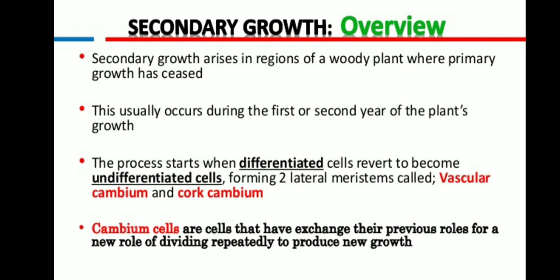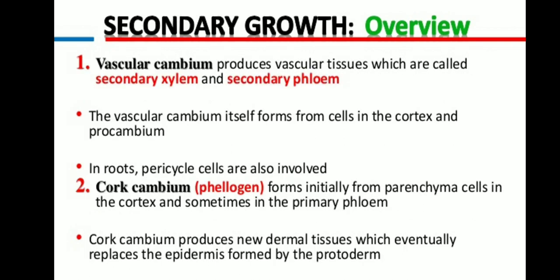This usually occurs during the first or second year of growth of the plants. Perennial plants show such secondary growth activity. The process starts with differentiated cells reverting to become undifferentiated cells, which form the two lateral meristems: the vascular cambium and cork cambium. Cambium cells have exchanged their previous roles for a new role of dividing repeatedly to produce new cells.